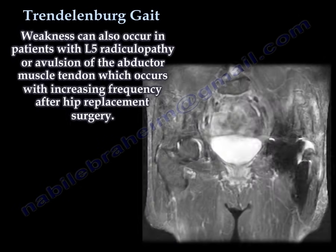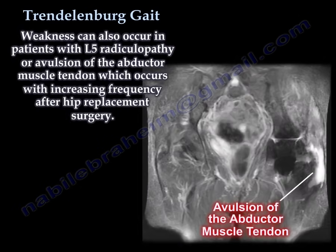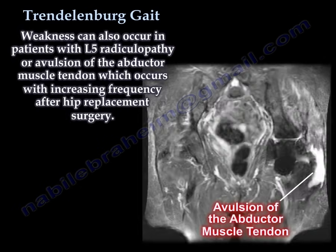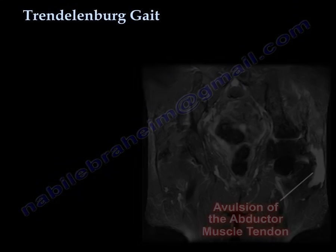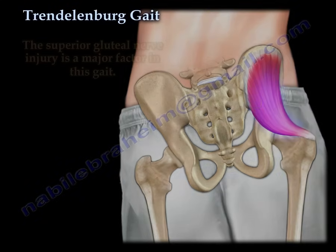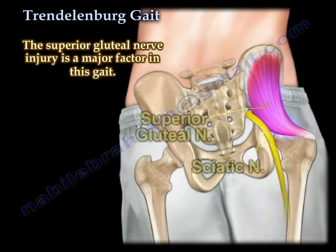Weakness can also occur in patients with L5 radiculopathy or avulsion of the abductor muscle tendon, which occurs with increasing frequency after hip replacement surgery. The superior gluteal nerve injury is a major factor in this gait.